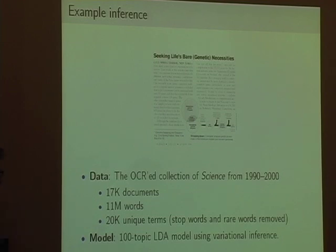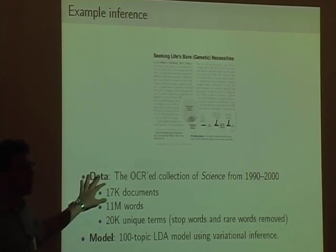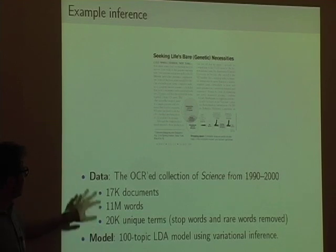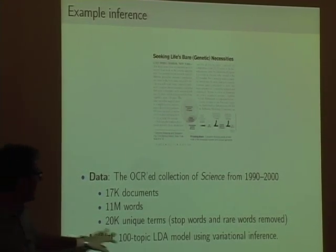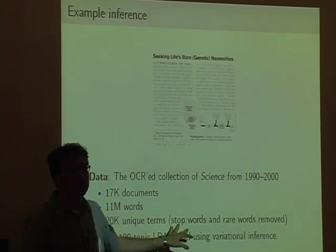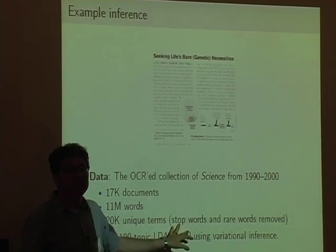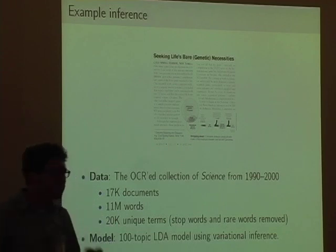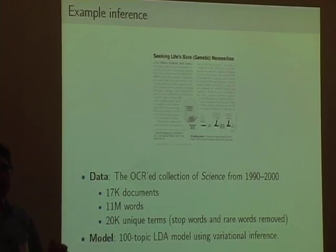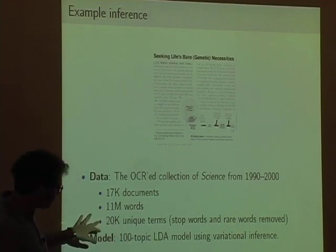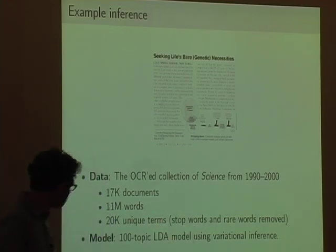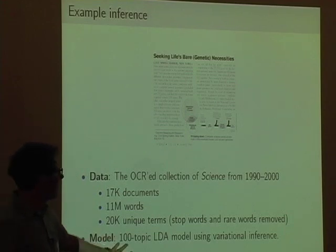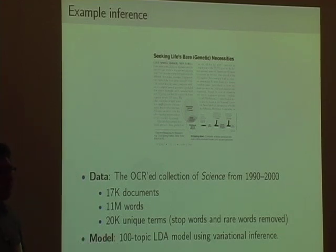Let's take 10 years of our science collection — about 17,000 documents, 11 million words, and a vocabulary size of 20,000 after removing stop words and rare words to speed up computation. Stop words are words like 'of,' 'the,' 'but.' Rare words are words occurring fewer than five times in this case. We fit a 100-topic LDA model using mean field variational inference.